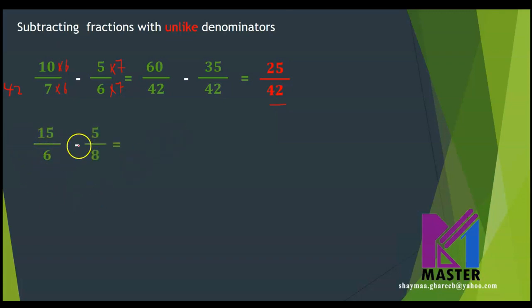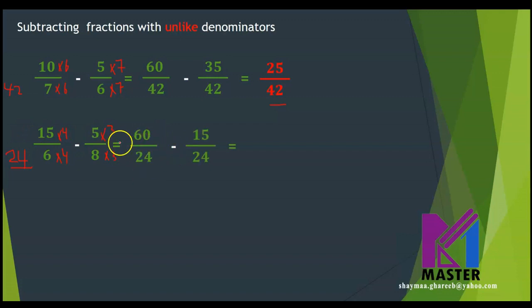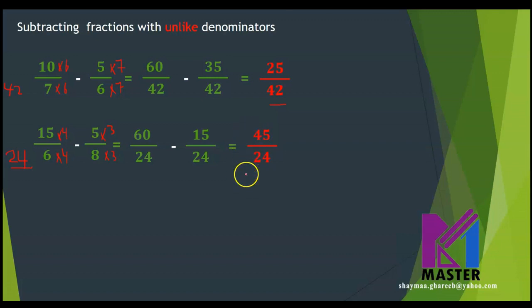Next example: 15 over 6 minus 5 over 8. The least common multiple between 6 and 8 is 24. I will multiply the first fraction by 4 up and down, and the second fraction by 3 up and down, so the denominators will be 24. Then the numerators: 15 times 4 equals 60 over 24, minus 5 times 3, which is 15 over 24. 60 minus 15 equals 45 over 24. Can I simplify this fraction? Yes — I will divide up and down by 3, giving 15 over 8. Is this the simplest form? Yes.